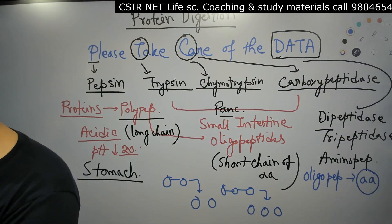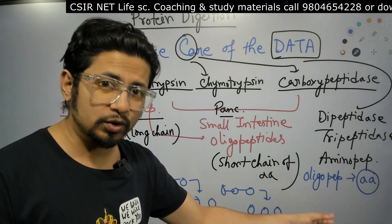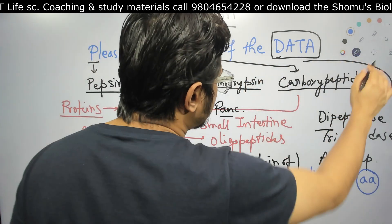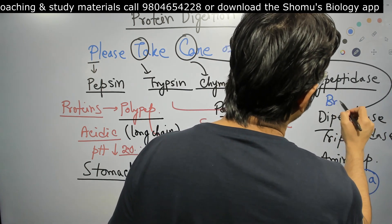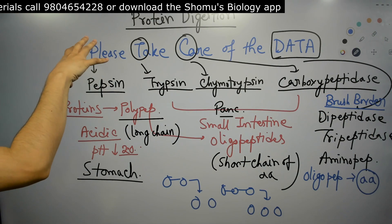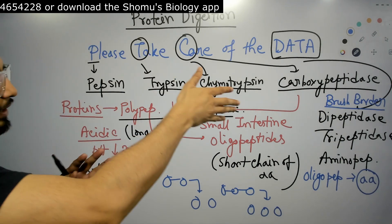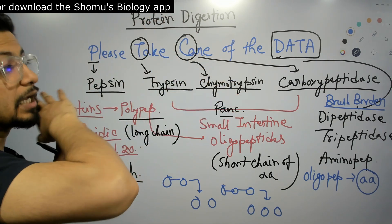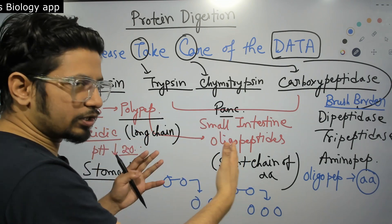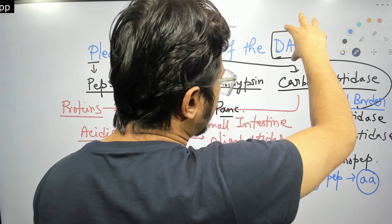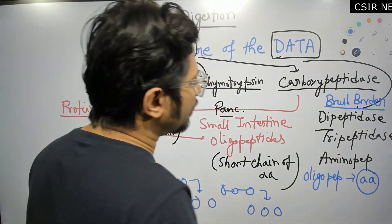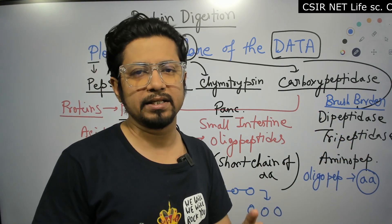At the end, the body requires individual amino acids, which are absorbed and used for the body's functions. Dipeptidase, tripeptidase, and aminopeptidase all work in the brush border cells of the small intestine. So starting in the stomach with pepsin, moving to the small intestine with trypsin, chymotrypsin, and carboxypeptidase converting polypeptides to oligopeptides, and finally the brush border enzymes converting those into single amino acids.